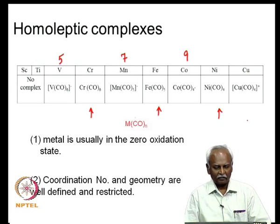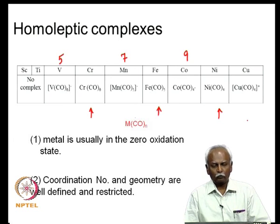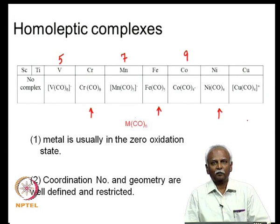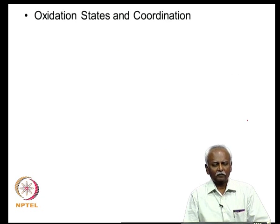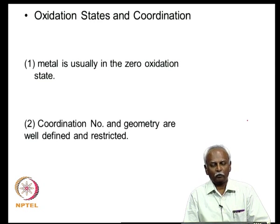The metal is in the zero oxidation state, and we also notice that the coordination number and the geometry appear to be restricted. In coordination chemistry — Werner's chemistry — the metal is in a positive oxidation state, and most complexes are either octahedral or tetrahedral. Unlike that, in organometallic chemistry there seems to be a restriction on the coordination number and geometry. The metal is found in the zero oxidation state and the coordination number and geometry are well restricted.